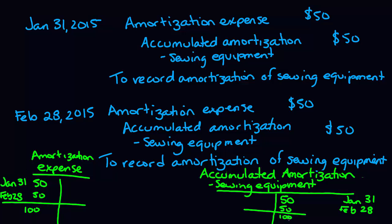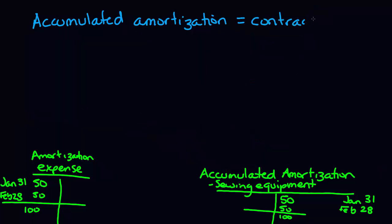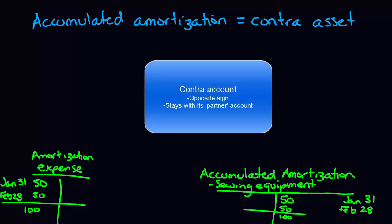We know that expense accounts go on our income statement as expenses, but what is an accumulated amortization account? The accumulated amortization account is actually called a contra asset account. A contra account always stays with its main account. So when we bought the sewing equipment, we would have set up an account called sewing equipment, and when we're amortizing it, we use the accumulated amortization sewing equipment account. The accumulated amortization account also has the opposite sign of the regular asset account — sewing equipment is an asset with a regular debit sign, while accumulated amortization sewing equipment has its regular sign as a credit.